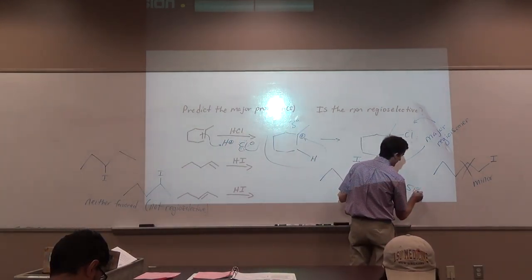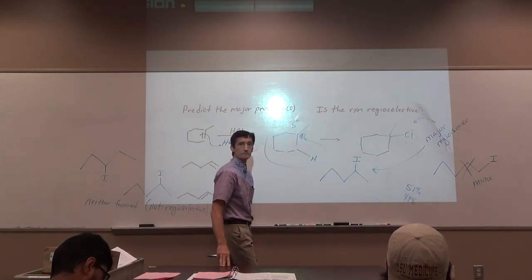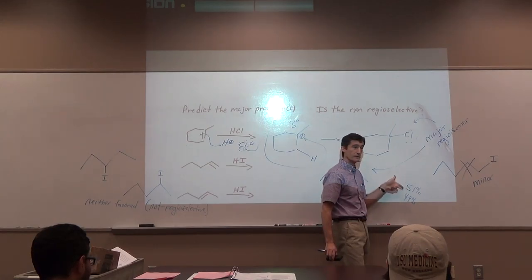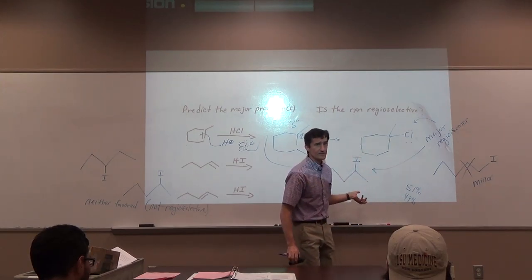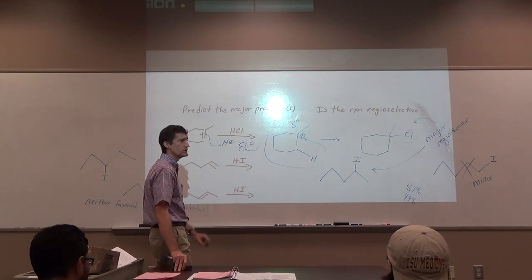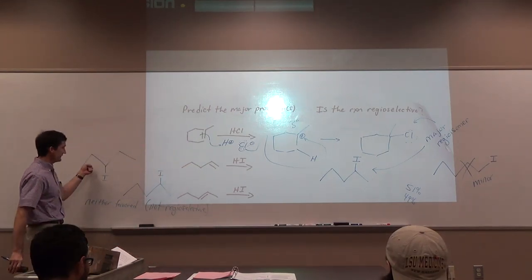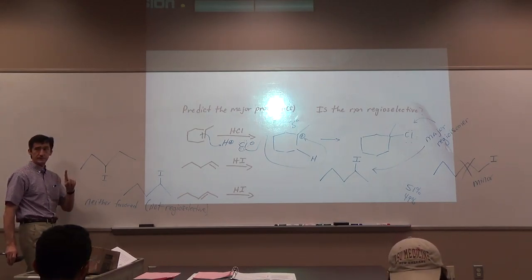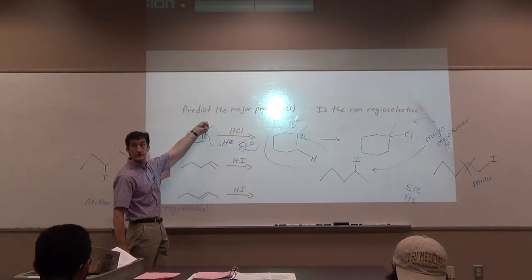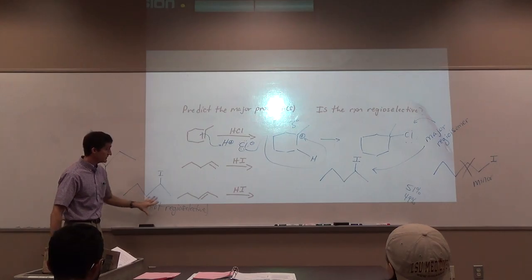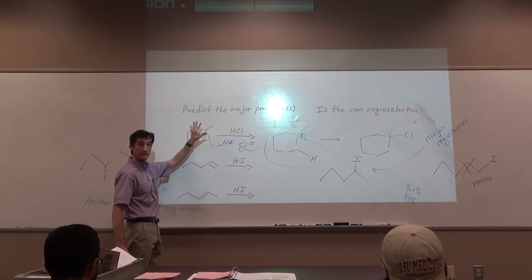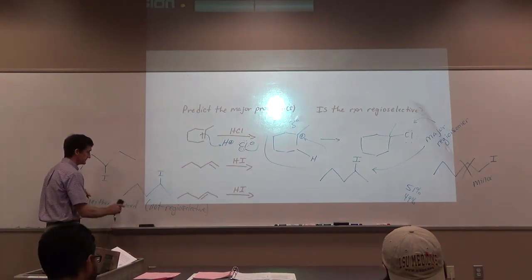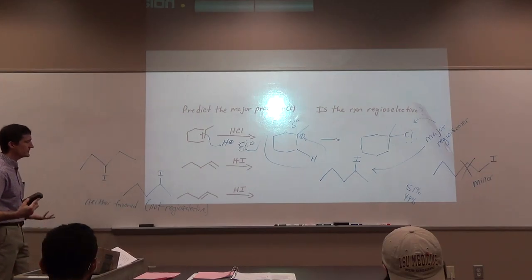For example, if you get one product in 51% yield and the other in 49%, would you call that regioselective? In practicality, that's no selectivity. Is this going to be as selective as the first example? No — nowhere near as selective, because in the first example you have a tertiary cation that's much more favored over the secondary. Here they're both secondary. So at the introductory level, we say this reaction is not regioselective.